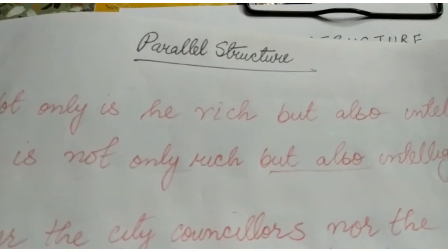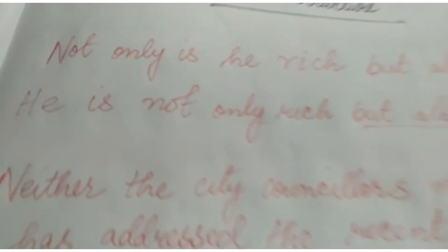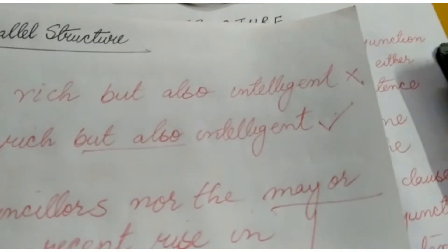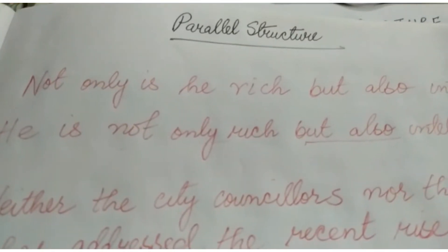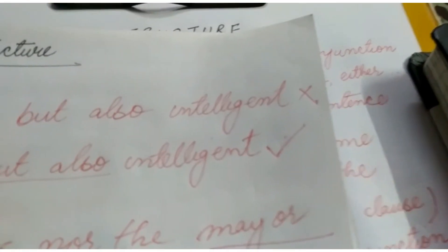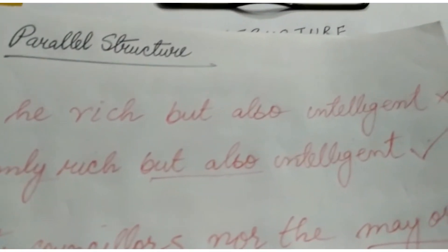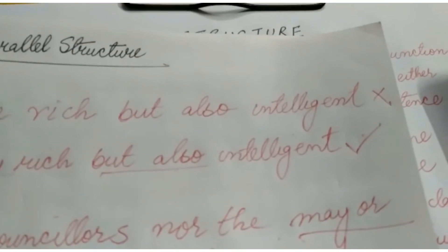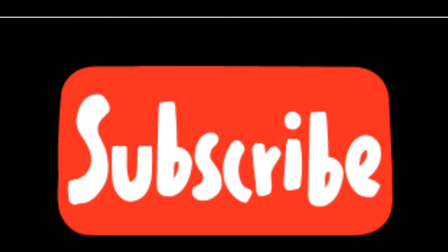Let us look at one more example. 'Not only is he rich but also intelligent' is not a correct sentence. The correct form is: 'He is not only rich but also intelligent.' This is correct because 'not only' is followed by the adjective 'rich' and 'but also' is followed by the adjective 'intelligent' — both parts follow adjectives, satisfying the parallel structure rule. Was this helpful? If yes, don't forget to like, comment, and subscribe to our channel and hit the notification bell for more such interesting videos. We will be back shortly — till then, bye!